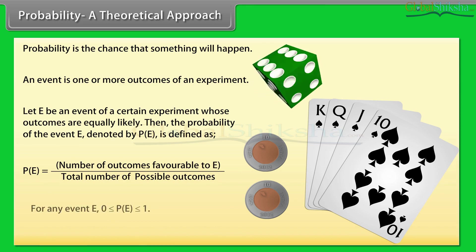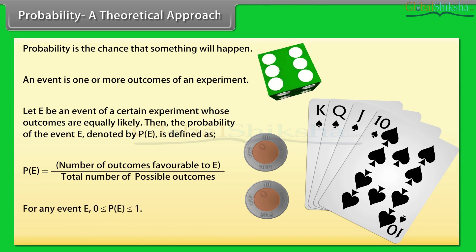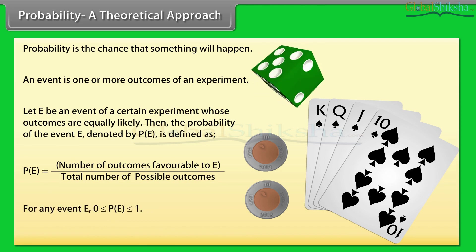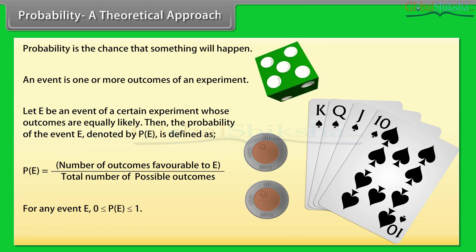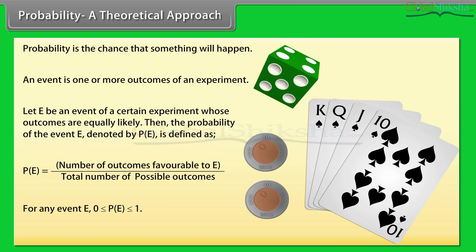For any event E, 0 is less than or equal to probability of event E, which is less than or equal to 1.